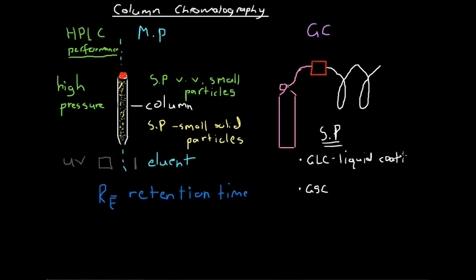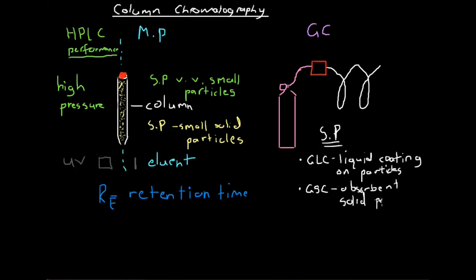In gas solid chromatography, the stationary phase is simply the solid particles that fill the column — often absorbent solid particles, the same concept as in the general column chromatography setup but inside a coiled column. The mobile phase in gas chromatography is a gas — we call it the carrier gas, because just like a solvent carries the sample through a column, the carrier gas carries the sample through the coiled column.